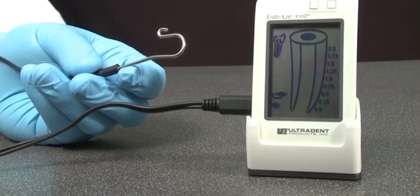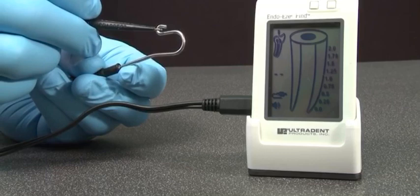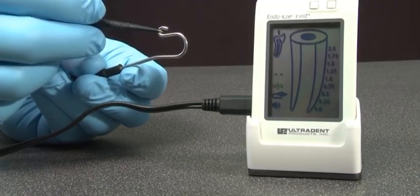Plug the file clip and the lip clip into the measuring cable, then touch the metal portion of the file clip to the lip clip. The connection icon should appear, demonstrating the electronic circuit is operating properly.